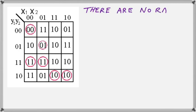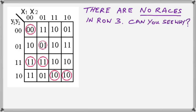Okay, so now we come down to row 3. And row 3 has no races. Can you see why? If you can't, go back and follow what we've said before. And you should be able to see why there are no races in row 3.